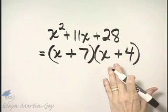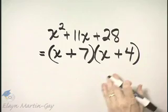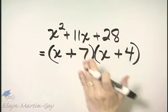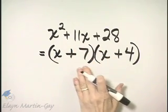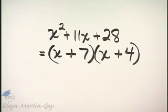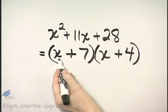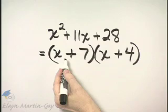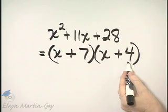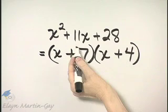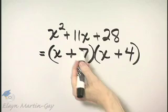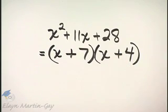Remember what factor means? It means write as a product. And I have written this trinomial as the product of x plus 7 and x plus 4. And how can you check? You can check by multiplying. First times first is x squared. Then that's 4x plus 7x which is 11x. And last times last is 28. So there is my factorization.